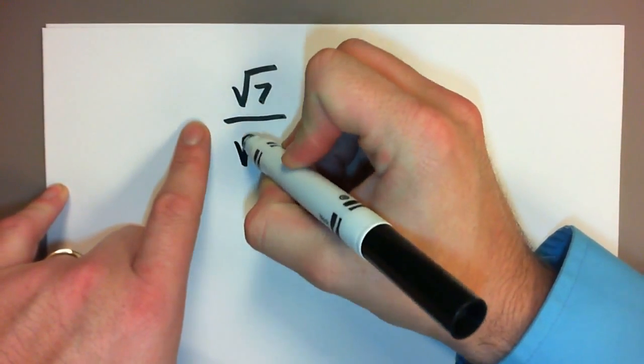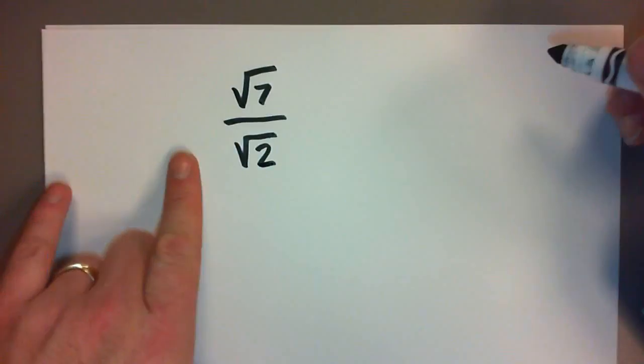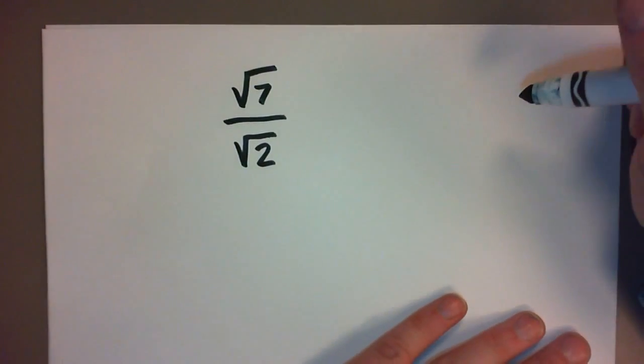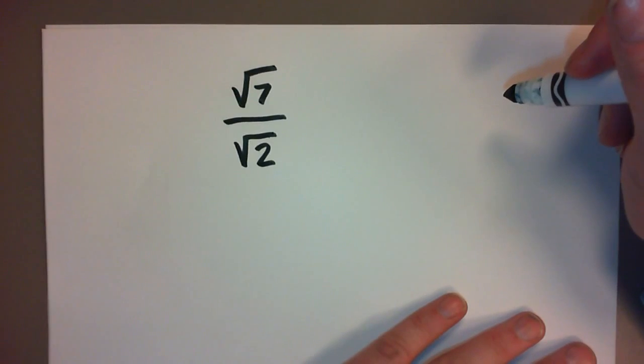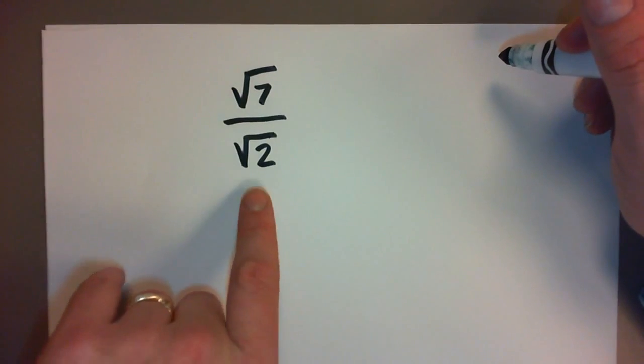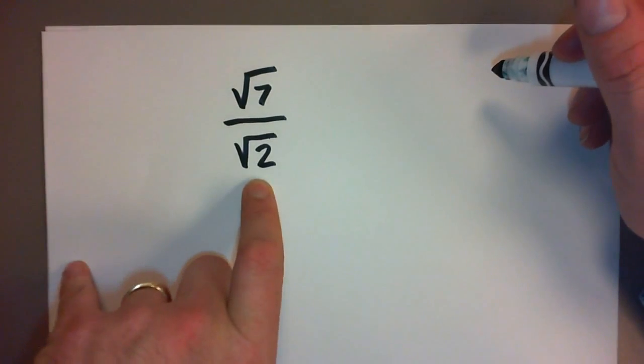This one looks like this: the square root of 7 divided by the square root of 2. Now we don't really like having square roots in the bottom of a fraction because, well I'm not really sure—it probably has something to do with not liking dividing by an irrational number, but we don't, so don't do it.